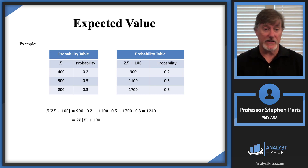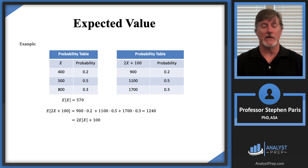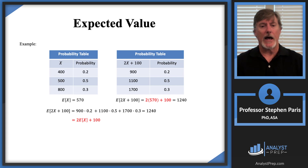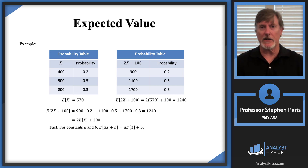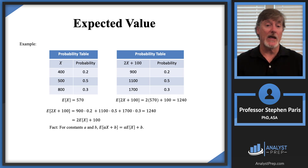Once we recognize that, let's make an observation. E[X] was 570. If we have a function of the random variable like 2X plus 100, we can calculate E[2X + 100] as 2 times 570 plus 100, giving us 1240 either way. More generally, for constants a and b, E[aX + b] = a·E[X] + b.